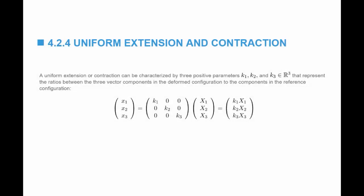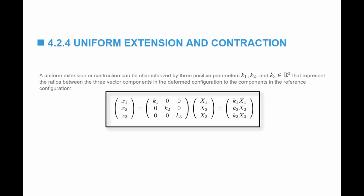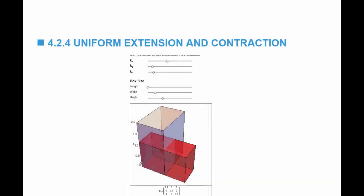In the three previous examples, all the rotations were rigid, meaning the object moved but there was no strain — the material points kept their distance with respect to each other. In this next example, the object is allowed to extend or contract. This type is called uniform extension and contraction. It is characterized by three positive parameters k1, k2, and k3, where x1 equals k1 times X1, x2 equals k2 times X2, and x3 equals k3 times X3. You also have a tool where you can play with the values of kx, ky, and kz to see how this affects the size of the box in the first, second, or third directions.